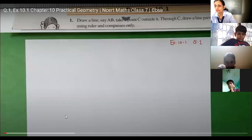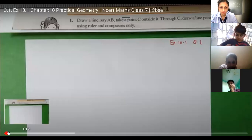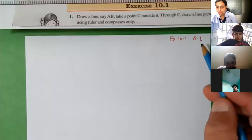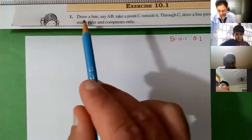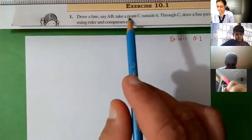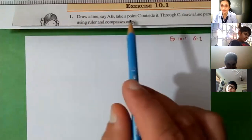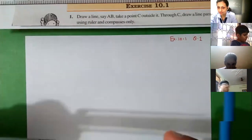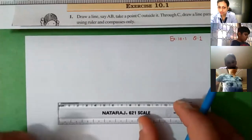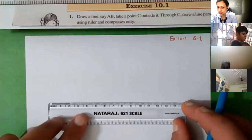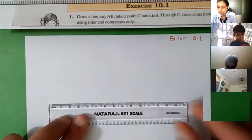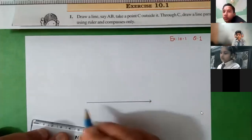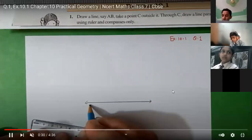Today we are going to do Exercise 10.1, Question number one. First of all, take a ruler and a pencil. In this question you have to draw a line AB. Take your scale and pencil, and with any measurement — because nothing specific is given, no centimeters are given — draw a line segment and mark it as A and B.